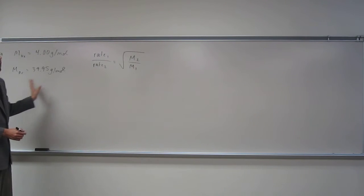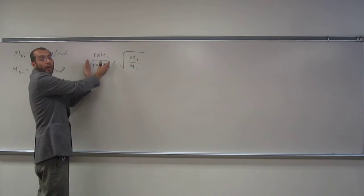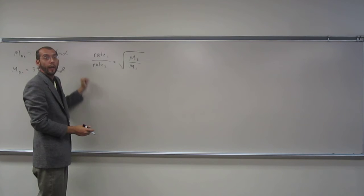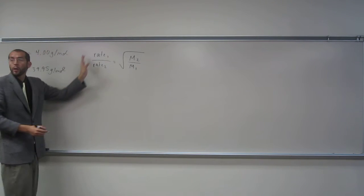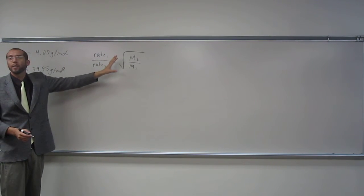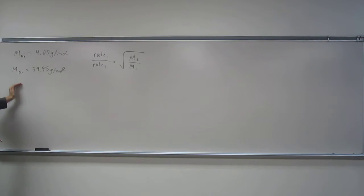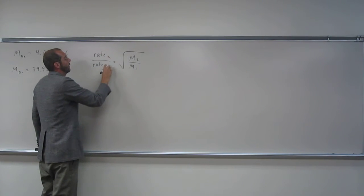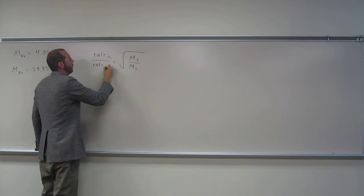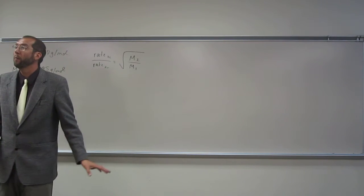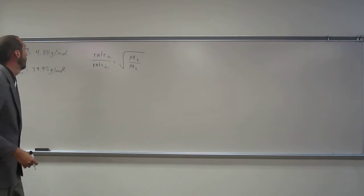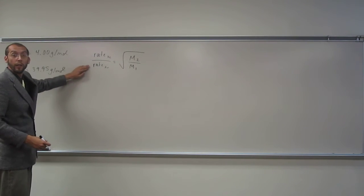So the other question, how much faster, is referring to what is this ratio here. So in other words, let's make this equation to say helium and argon here. So rate of helium we'll put on top, rate of argon we'll put on the bottom. Why did I put helium on top? Because we know that's going to go faster than argon. So this will be a bigger number than this one.